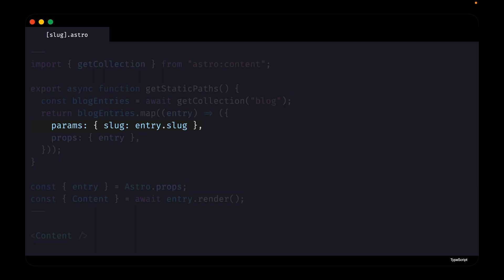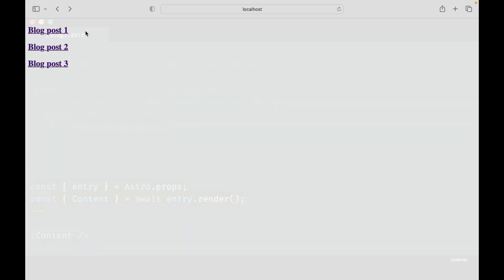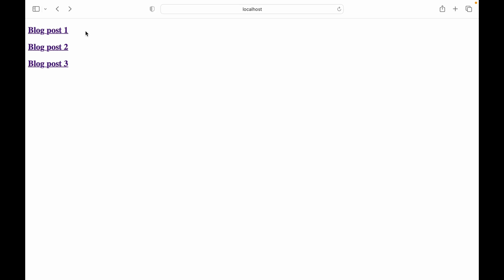The second property, props, returns each blog post's content. And finally, we get the data returned from the getStaticPaths function and render the blog content using a special content component provided by Astro. Now if you visit localhost 3000 and click on one of the blog post titles, you should see the post content.